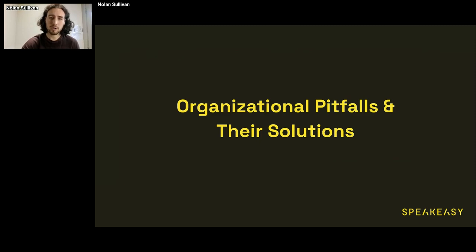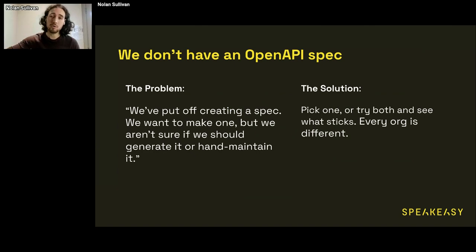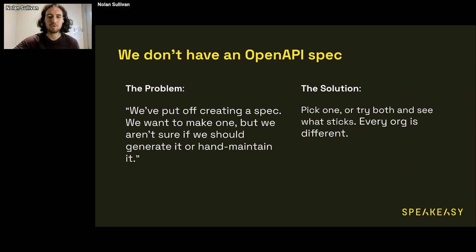Some organizational pitfalls you have to overcome even before you can start making changes to get a good spec. You need to have an OpenAPI spec. I see a lot of companies that don't, and usually it's not because they don't want to — they're just procrastinating because they haven't decided if they want to hand-maintain it or generate it. My solution is just pick one, try both, find out what sticks. I don't think people should be opinionated about this. It's better to have a generated spec than to not have one at all.